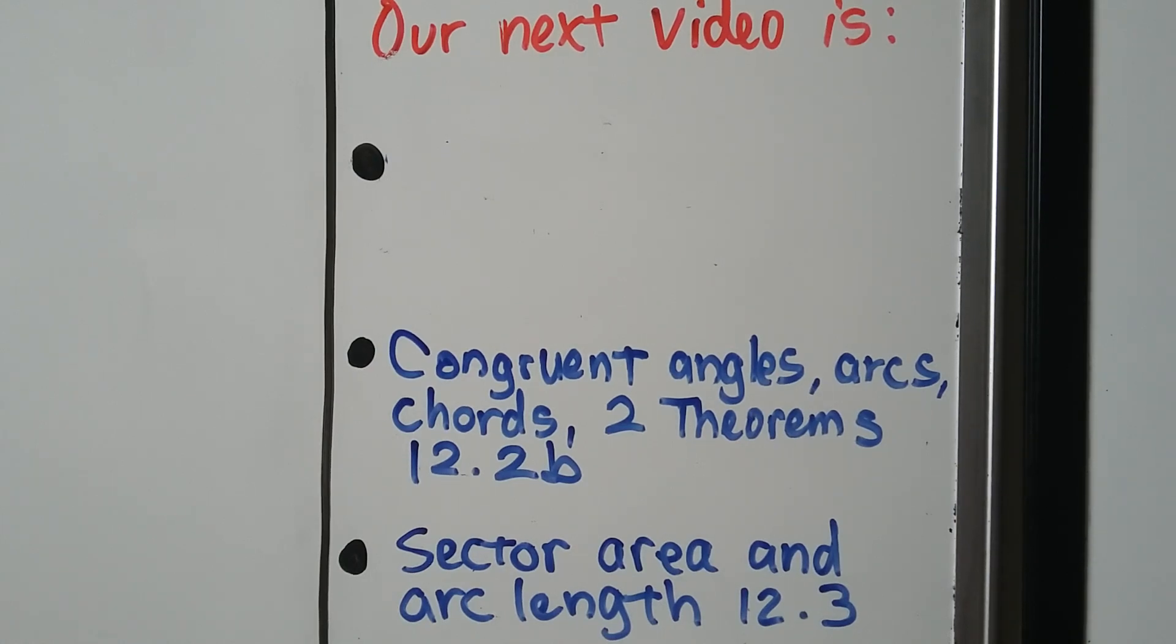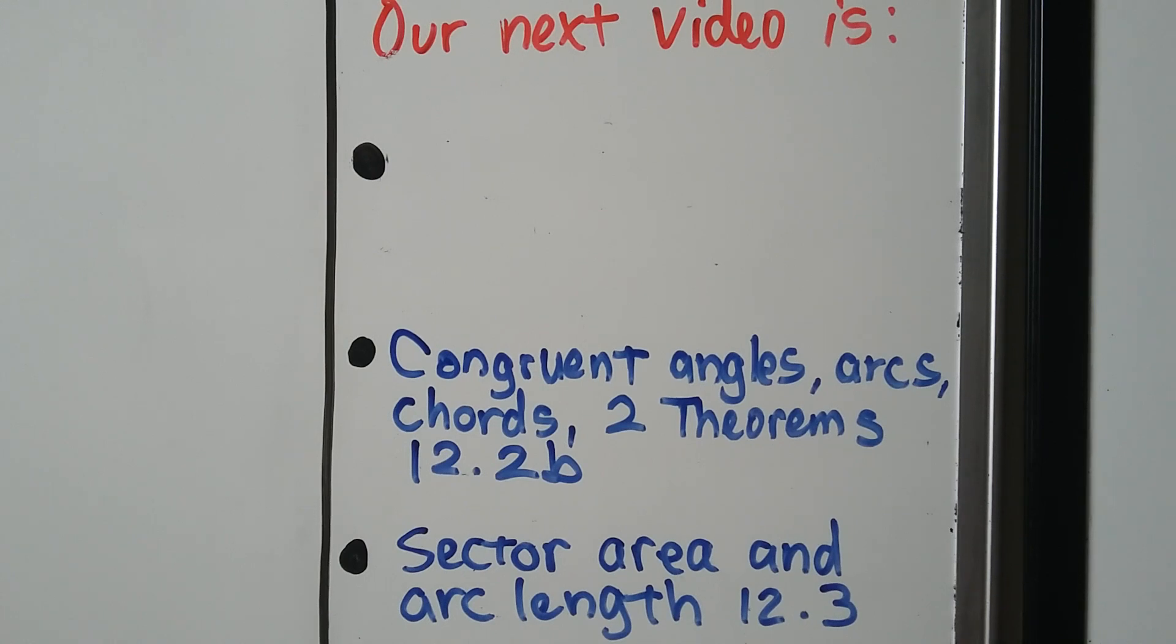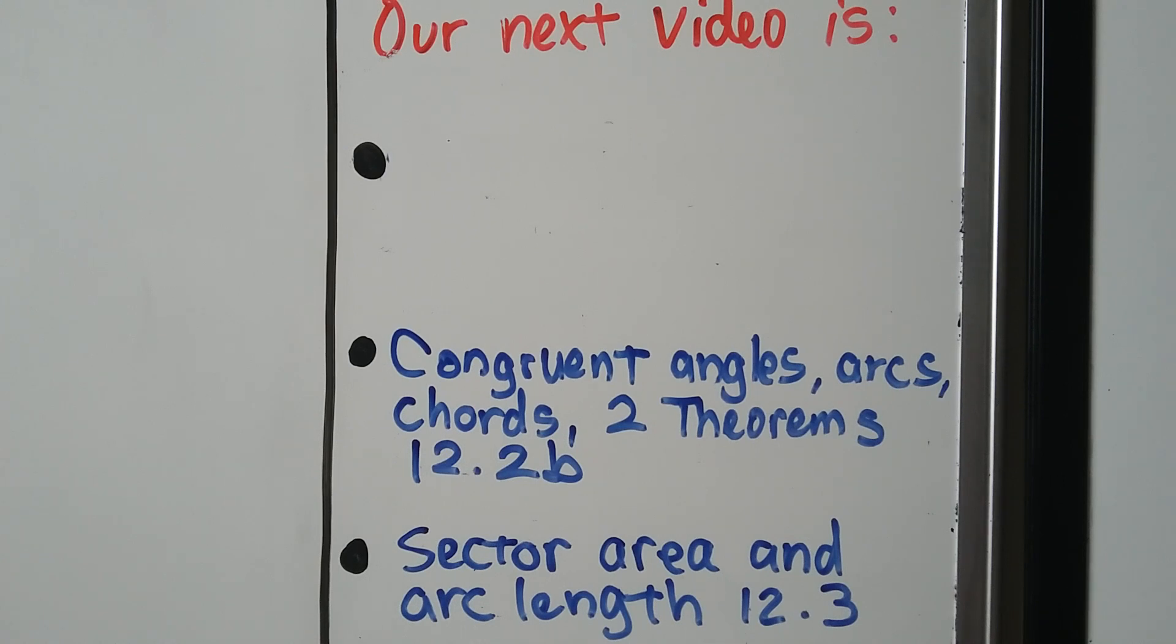So our next video is going to be the second part of this lesson. We're going to talk about congruent angles, arcs, and chords, and we have two theorems in 12.2b. Then we're going to move on to sector area and arc length in 12.3.